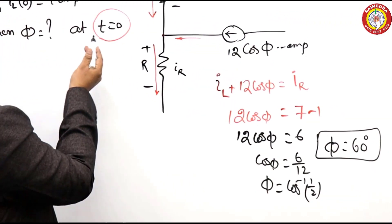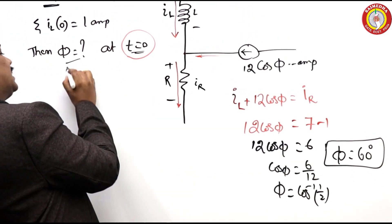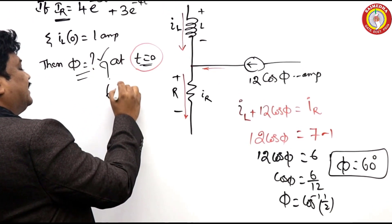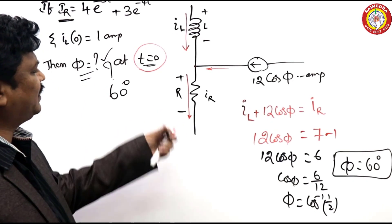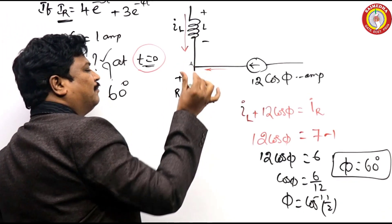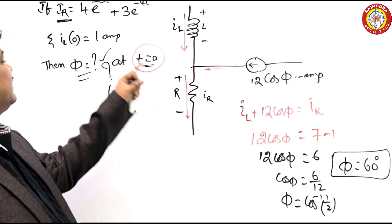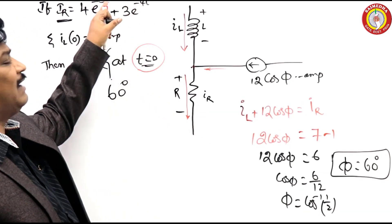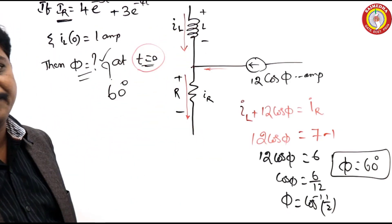Hence φ equals 60 degrees. This is what - at T equals 0, φ is 60 degrees. Very simple question. We have to apply only KCL, but meanwhile some conditions are given at T equals 0. Those numerical values we have to substitute, and automatically we will get the answer.